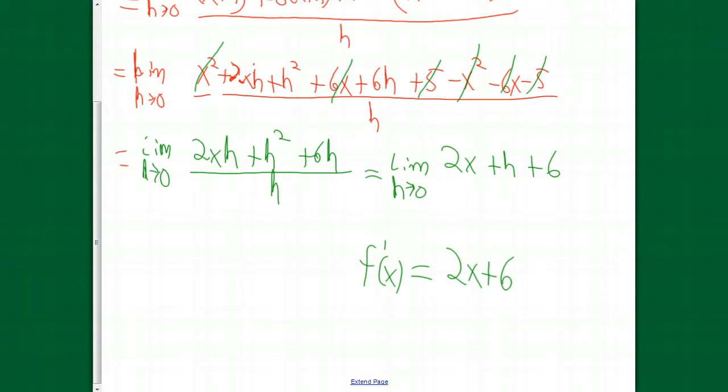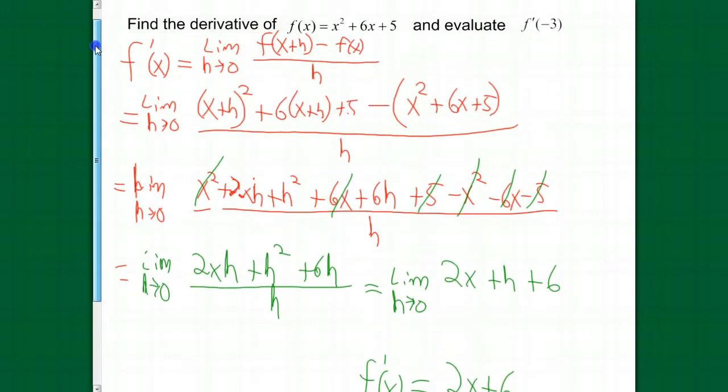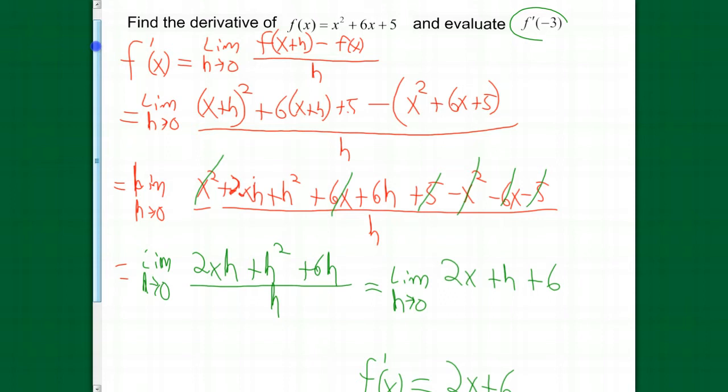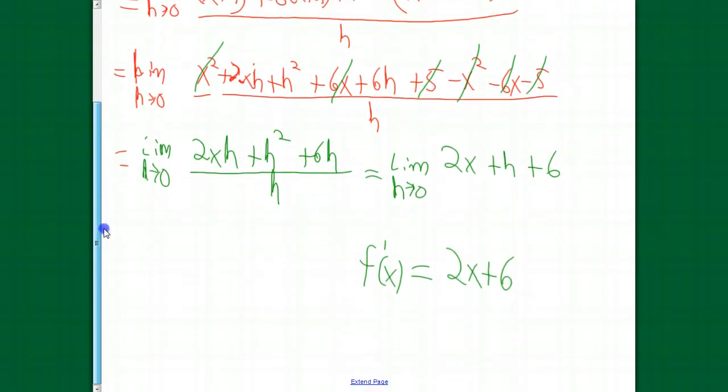That is the derivative. That is the function that will tell us the slope of the tangent line at a certain x value. Now, this question wants us to evaluate f prime of negative 3. So, what that's asking is, what is the slope of that tangent line to this function at an x value of negative 3? So, we plug in negative 3 into f prime, and we get 2 times negative 3 plus 6.